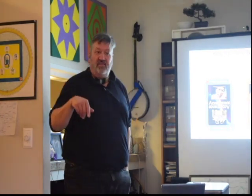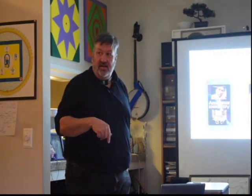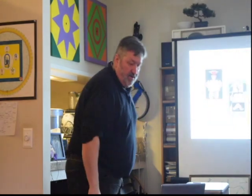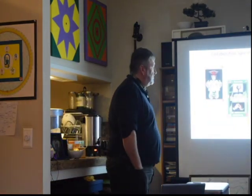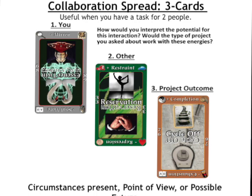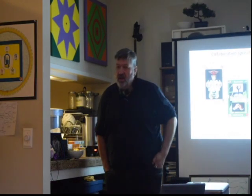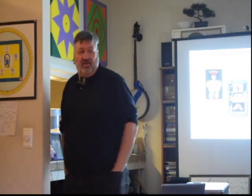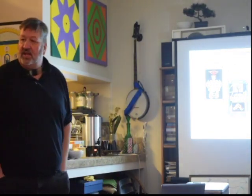Collaboration card spread. Notice the placeholders: you, other, project outcome. When you look at that — 'you' is mirror, negative pull of essence twin or shadow side; 'other' is reservation with positive pull of restraint; 'project outcome' is cycle off completion. That sounds good. Just on the face energy of that, any comments?